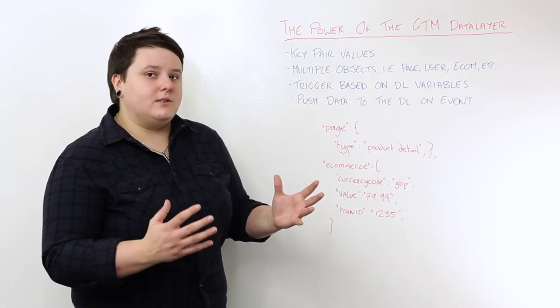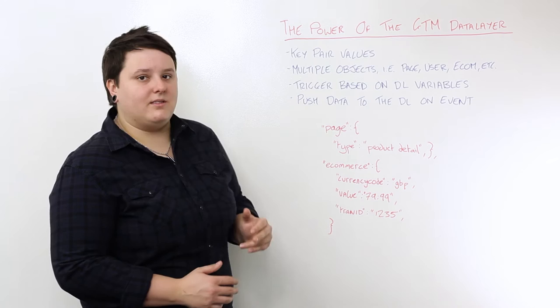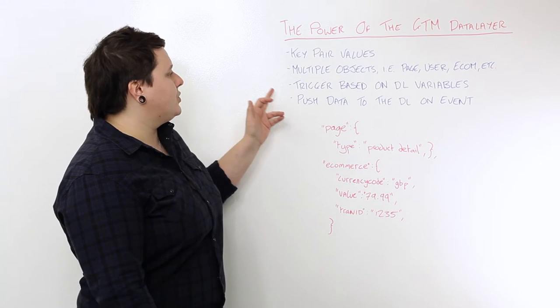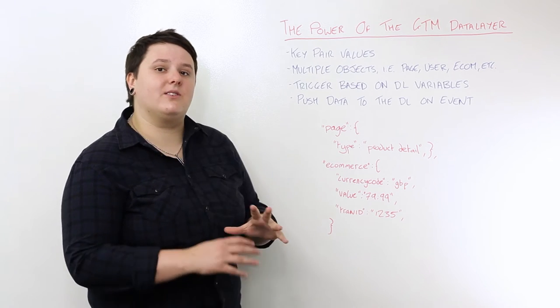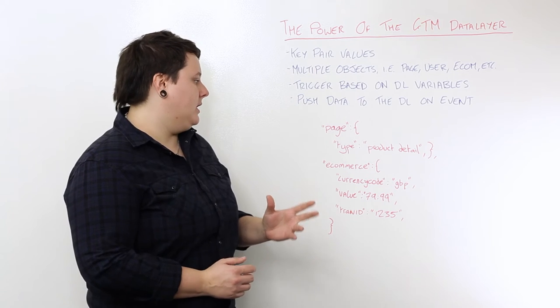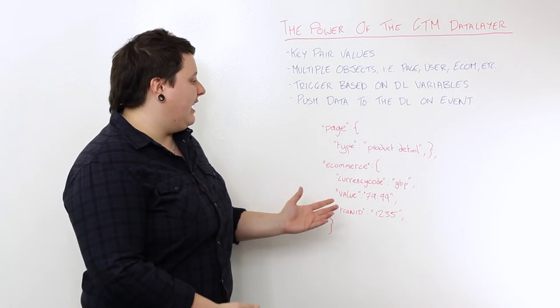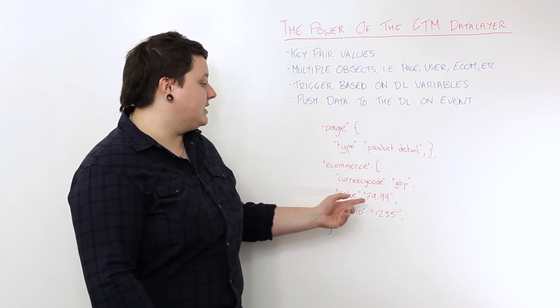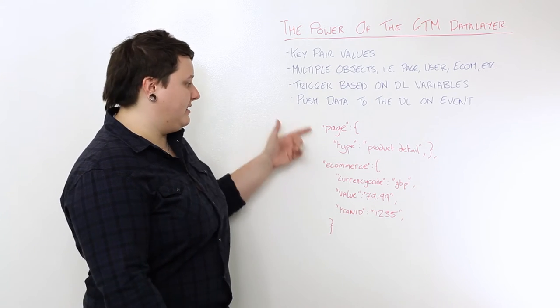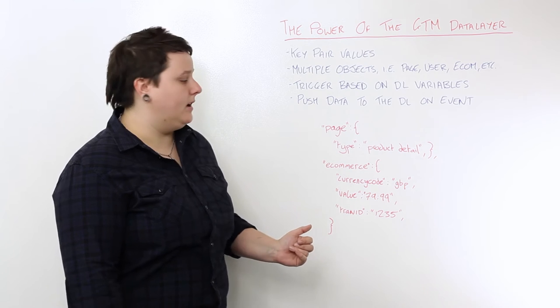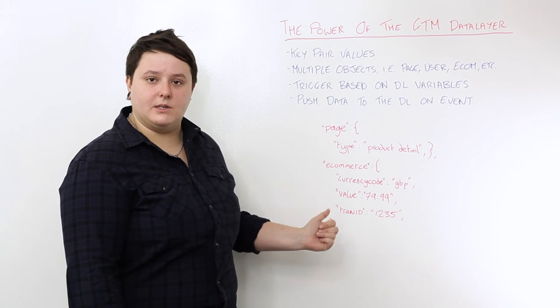And the power of this is really where you use this data and what you do with it, and this is how you trigger it based on the variables that you're sending through. So it might be that you have a certain tag that you only want to fire if the value on the page is greater than £70. So on this particular page, when this data layer was fired, this would trigger because the value is greater than £70.